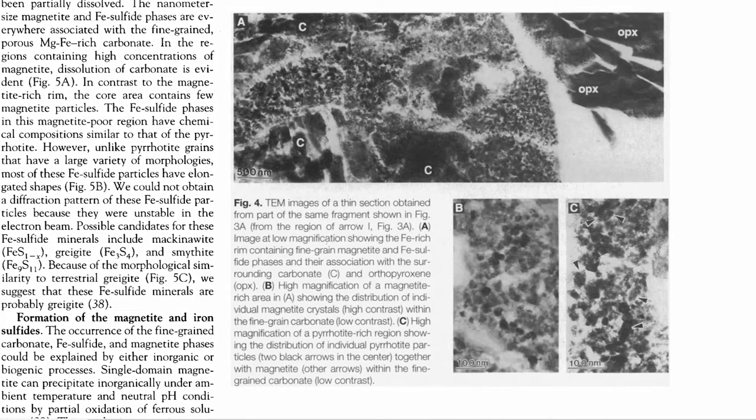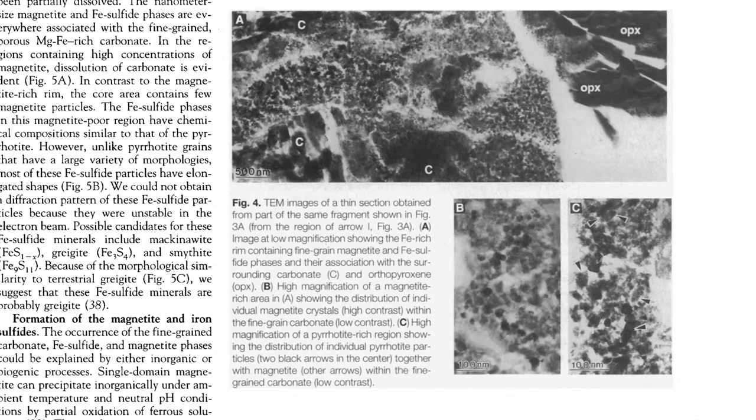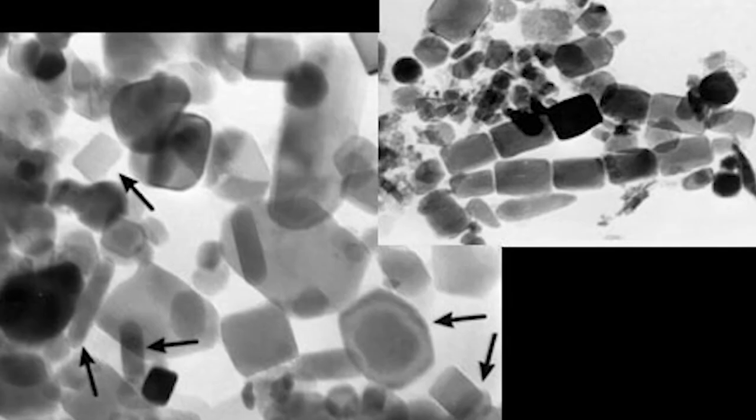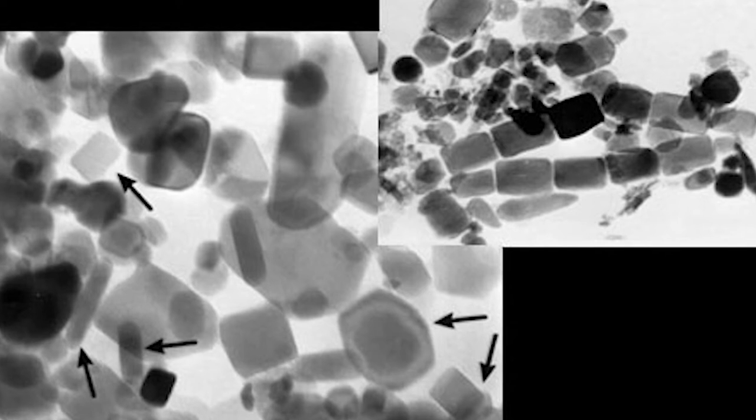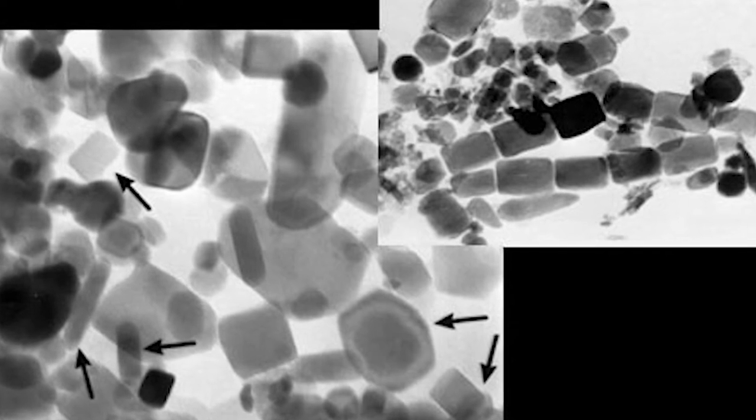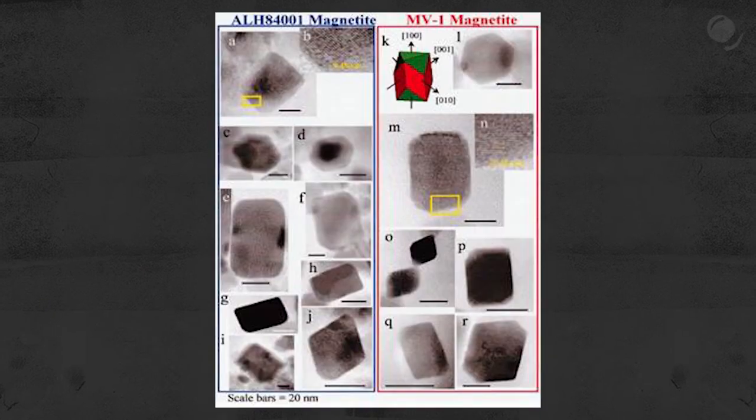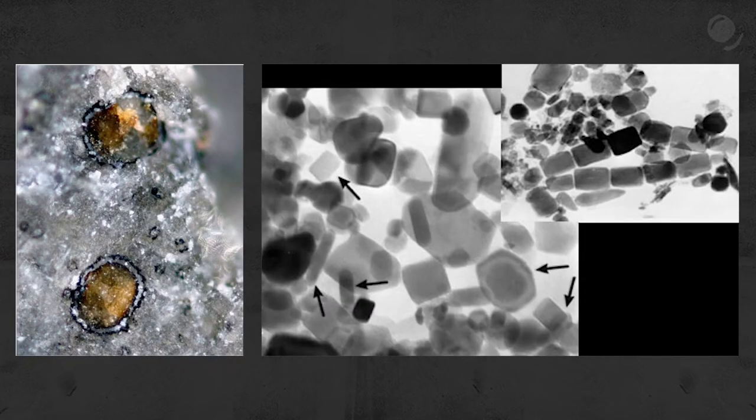The third line of evidence is microscopic mineral particles that could be produced by life forms — specifically, magnetite crystals. On Earth, some bacteria produce magnetite to navigate. According to the article, the purity, shape, and structure of magnetite crystals in ALH 84001 are similar to those made by some bacteria on Earth. Authors also mentioned that those particles were grouped in an unusual way.